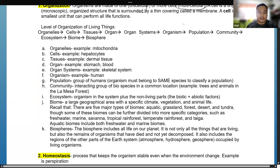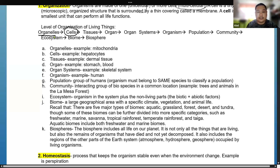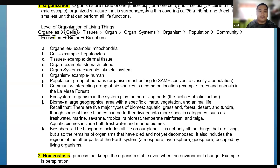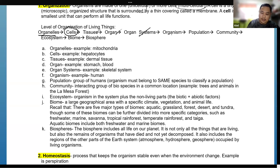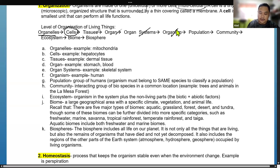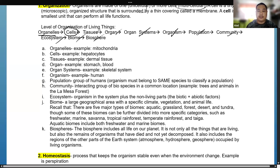With regards to levels of organization, the simplest would be cells. At parts of the cell we have organelles — note that organelles is different from organ. From organelles we have cells, then tissues, then organs, then organ systems, then an organism, and then we also have population, community, ecosystem, biome, and the biosphere.